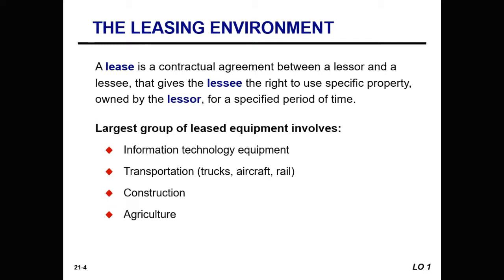A lease is a contractual agreement between a lessor and a lessee that gives the lessee the right to use specific property owned by the lessor for a specified period of time. In return for this right, the lessee agrees to make rental payments over the lease term to the lessor. The lessors that own the property include banks, captive lease companies, and independents.